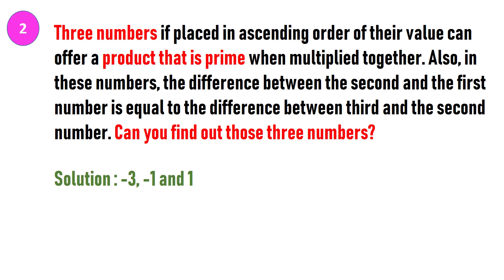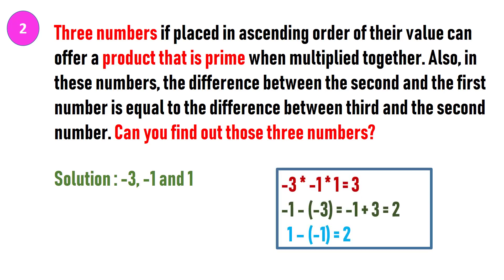The three numbers are minus three, minus one and one. If these three numbers are multiplied, it offers a product which is three, a prime number. Also in these numbers, the difference between the second and the first number is equal to the difference between the third and the second number. The difference here is two.